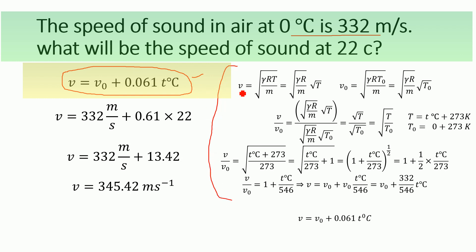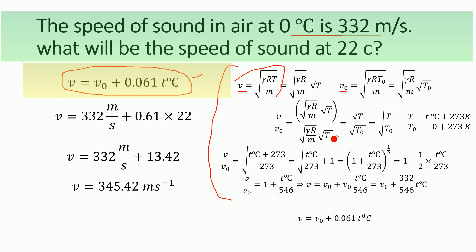We know that the velocity of sound in air is given as the square root of (γRT divided by M). We have velocity v at a specific temperature t, and velocity v-naught at 0 degrees centigrade. Taking the ratio v divided by v-naught, we get the square root of (γR/M × T) divided by the square root of (γR/M × T-naught), where T-naught is the temperature at 0 degrees centigrade.